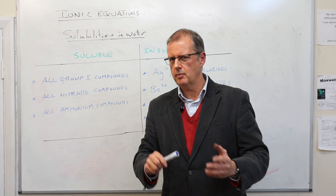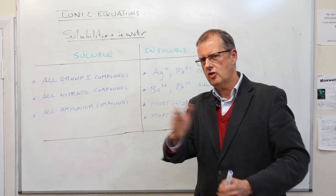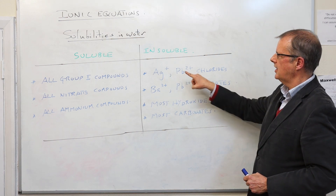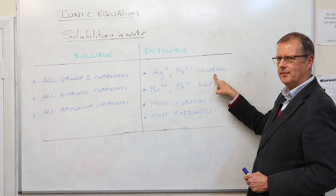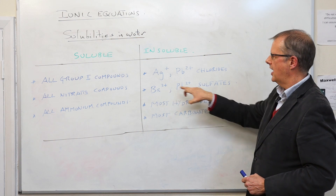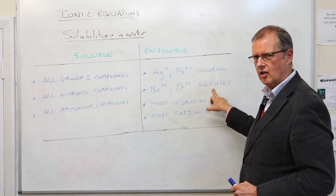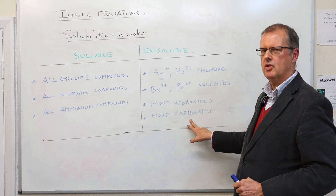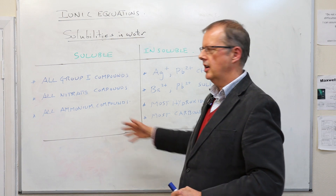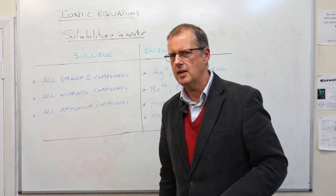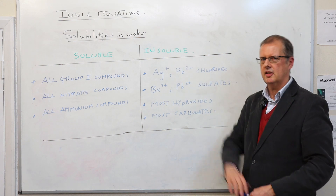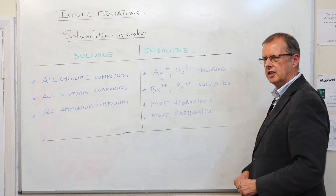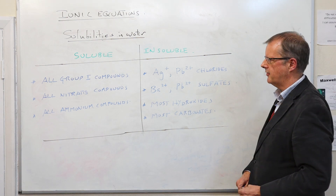What is insoluble? While there are degrees of soluble and insoluble, let's try to be clear. Silver and lead chlorides are insoluble. Barium and lead sulfates are insoluble in water, and generally hydroxides and generally carbonates — most of these are insoluble. If you make a note of that table, it's going to help you a lot when we develop the discussion on ionic equations. That simple little guide is quite powerful for the work coming up.